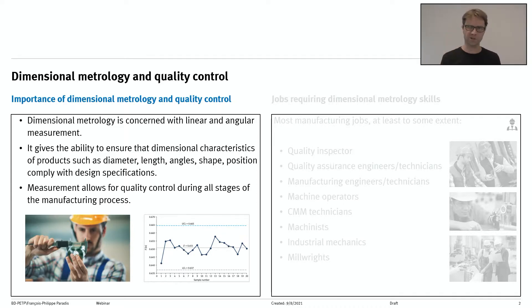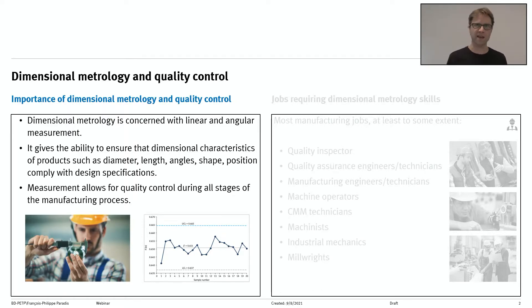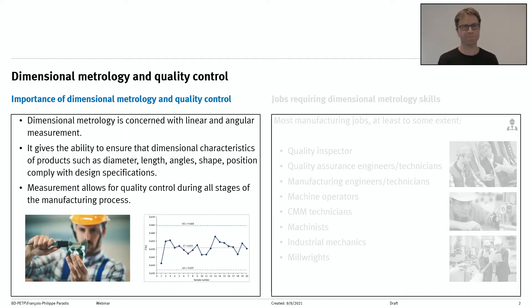Dimensional metrology is concerned with basically linear and angular measurements. It gives you the ability to ensure that the dimensional characteristics of products — like length, angle, diameter, shape, and position — comply with design specifications or what the engineer had in mind.